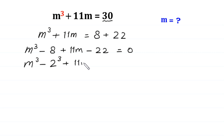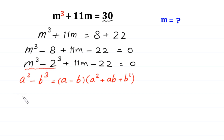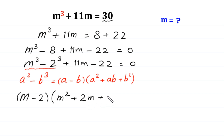Next, m cubed minus 8 can be written as m cubed minus 2 cubed. By using the algebraic identity a cubed minus b cubed equals (a minus b)(a squared plus ab plus b squared), this m cubed minus 2 cubed can be factorized as (m minus 2)(m squared plus 2m plus 4). From the remaining two terms, 11m minus 22, we can factor out 11 as a common factor.